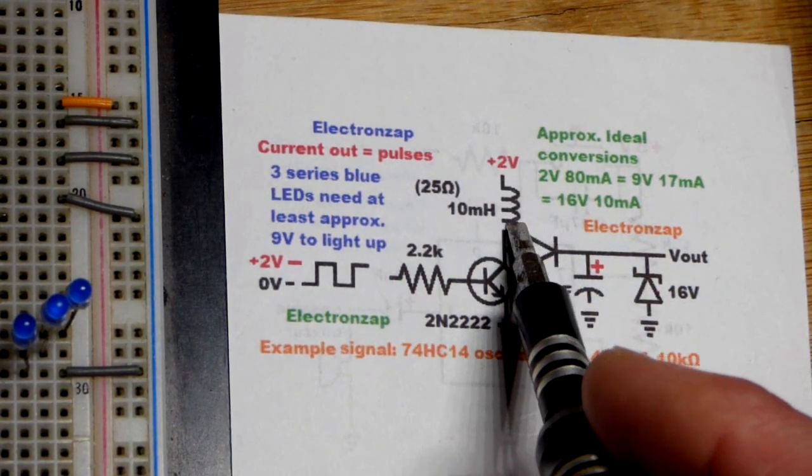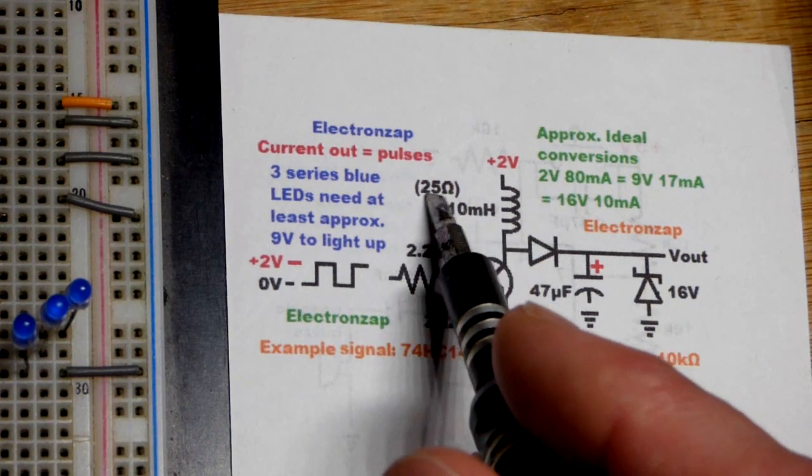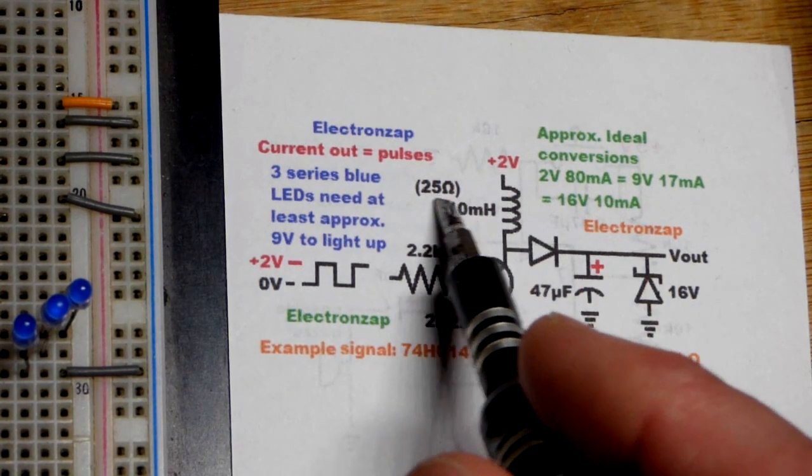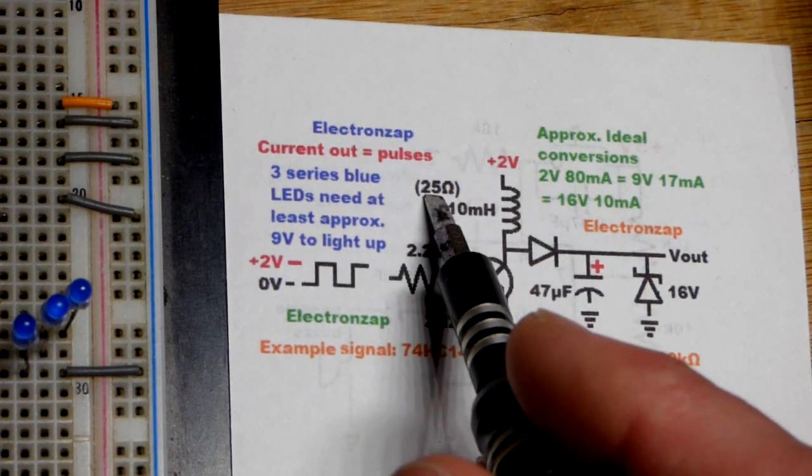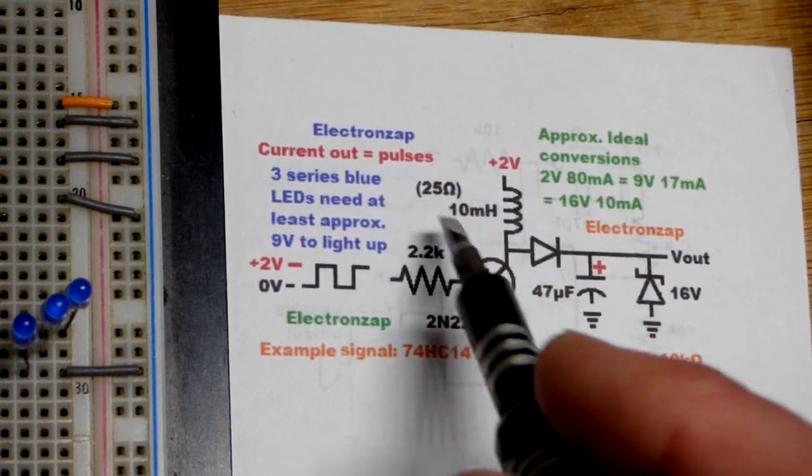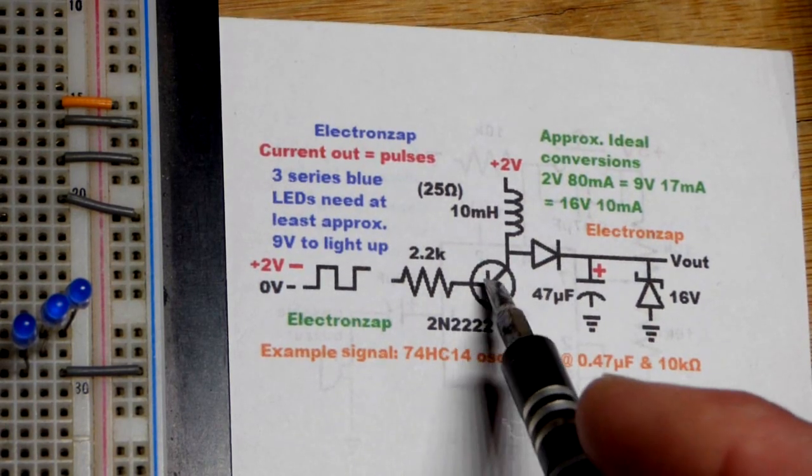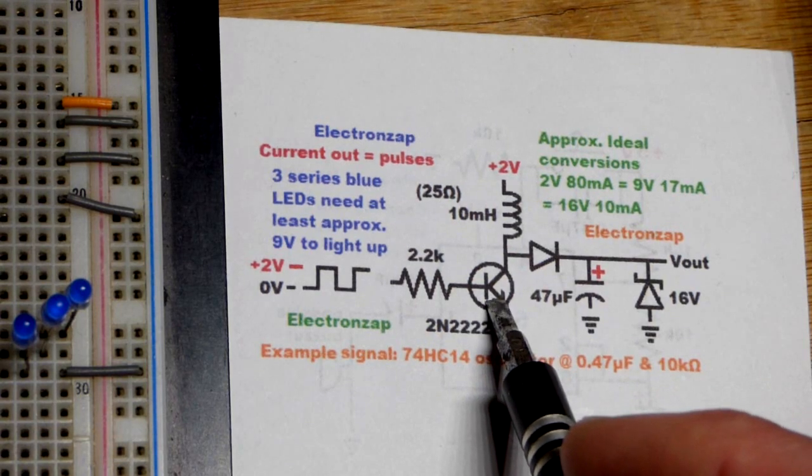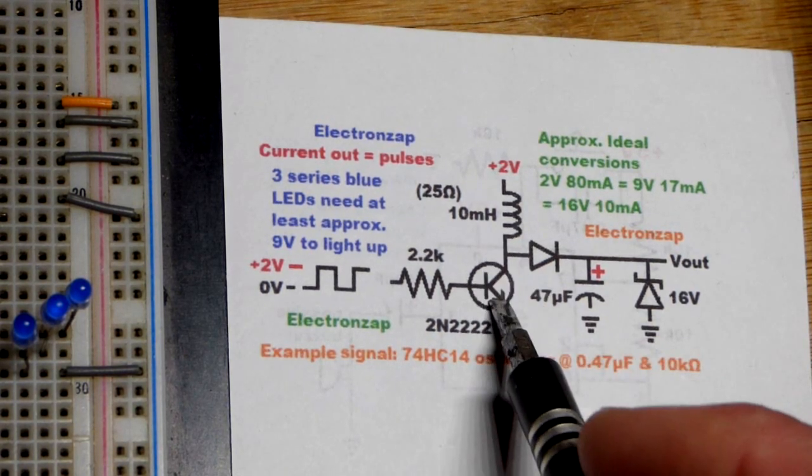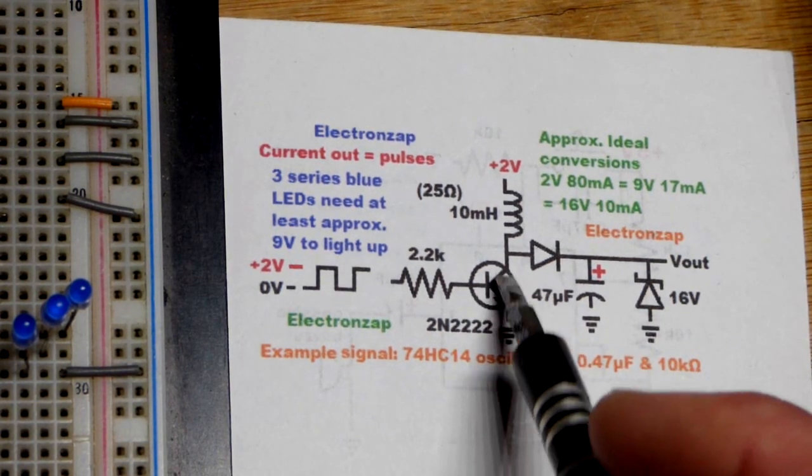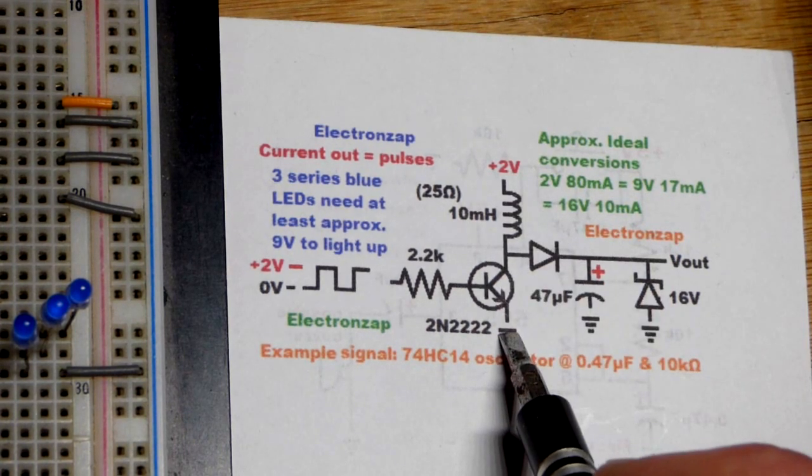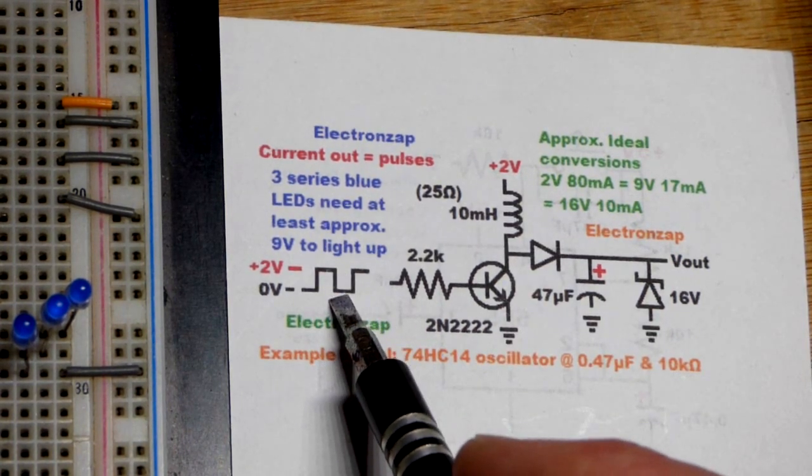Inductors don't instantly start passing current though. And ultimately what's going to limit current is how much resistance the inductor has. Mine has 25 ohms right there, which I think keeps everything within the power limits of the components. I could be wrong though, but I think we're good to go in the circuit. In any case, current starts flowing through.